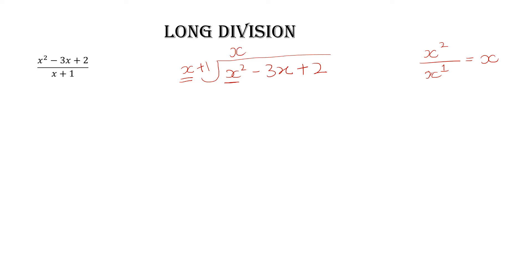After that, one by one multiply this x by the divisor. x times x gives you x², write it under the x² in the dividend. Then multiply x with 1, you get x, so write plus x under the x term. In division, you know that we always subtract.